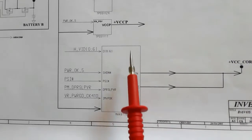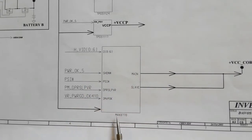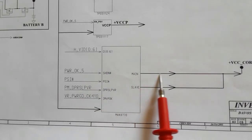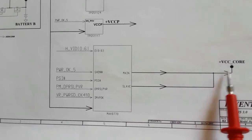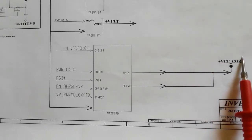Here is the MAX8770, the power management IC for the CPU. It generates the plus VCC core.